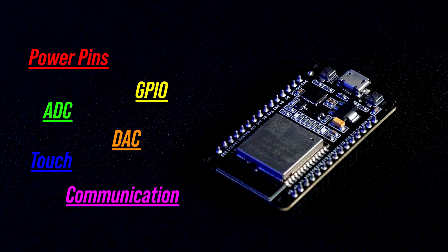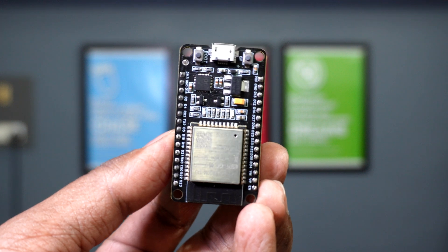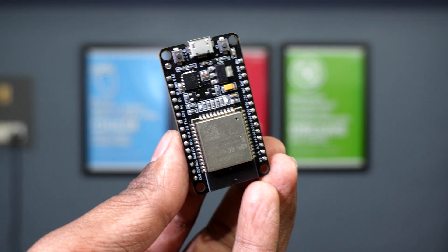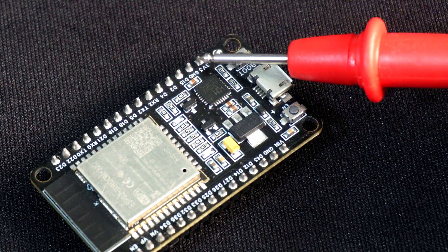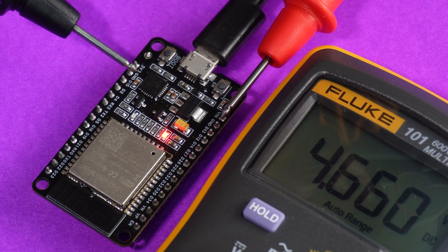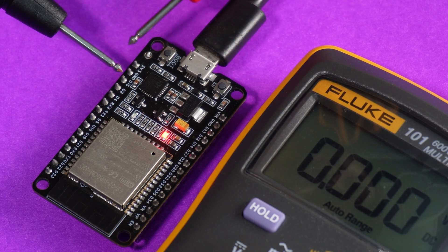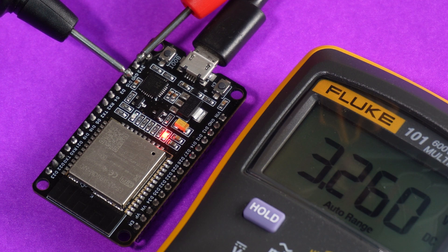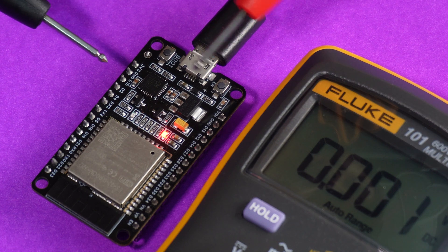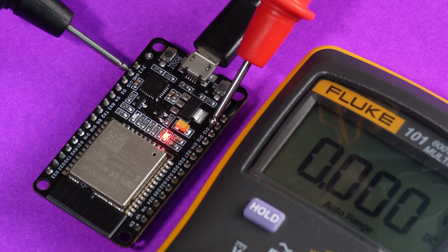Let's start with the power pins first. The ESP32 is a low-power microcontroller and needs only 3.3V to work. There are a total of 4 power pins on this board. The VIN pin receives 5V from the USB and regulates it to 3.3V using an on-board voltage regulator. The 3V3 pin supplies 3.3V to your connected sensors and modules, while both ground pins are at zero potential.